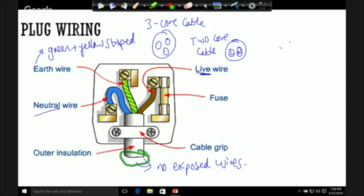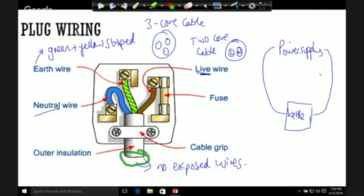So in a very simple diagram, if you have something connected to the power supply, you would have a cable going to the appliance - so let's just assume this is a kettle - and then you would have a wire going from the kettle back again.